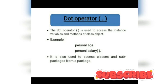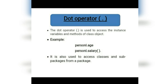Now the dot operator. Many times we use the dot operator to access instance variables and methods of a class object. To access a particular variable or method of a class, the dot operator is used. For example, 'person.variable' — where person is the object — and using the dot operator we access each variable. Similarly, 'person.salary' where a method is accessed using the dot operator.